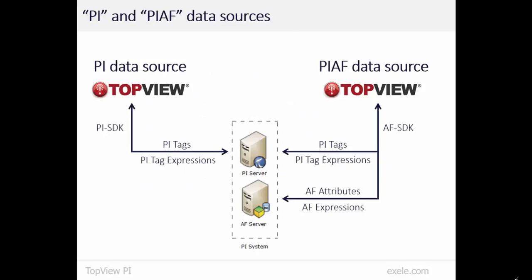On the left side of the screen is the Pi data source, our long-established Pi-based data source for monitoring Pi tag data from one or more Pi servers. Our Pi data source uses the Pi SDK to monitor Pi tag values and Pi expression results to detect alarm and abnormal events. On the right is the Pi AF data source, our newer Pi-based data source for monitoring both Pi tag and AF element attribute data. In addition to monitoring expressions of Pi tags, Pi AF also supports expressions involving AF attributes.